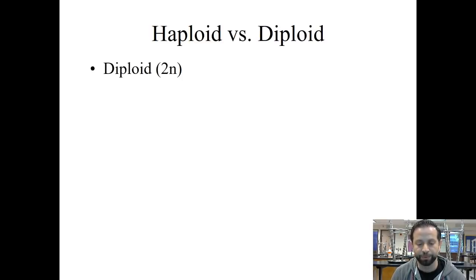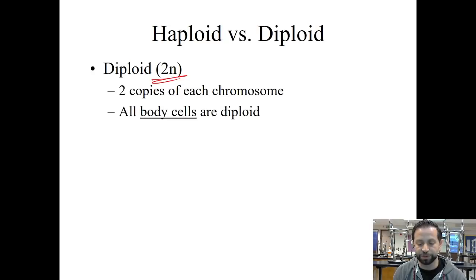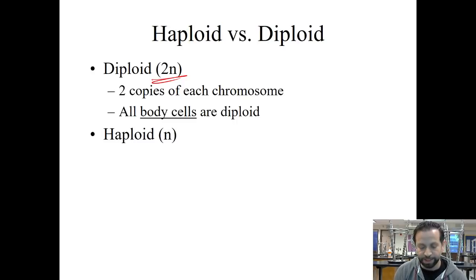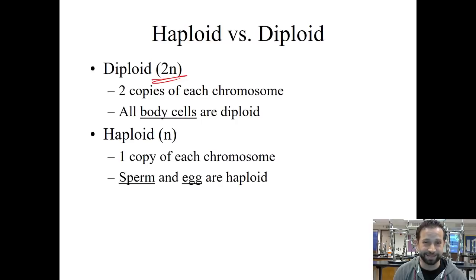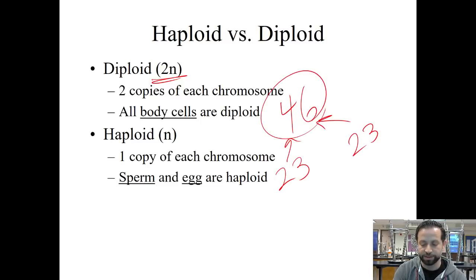Haploid versus diploid — diploid is what we refer to as 2N, meaning two copies of each chromosome, and all of our body cells are diploid. Haploid is what we call N — one copy of each chromosome — and our sperm and egg cells are haploid. We have 46 chromosomes in our body cells, and 23 in our sperm or egg cells. Mom donates 23 and dad donates 23, giving you 46.